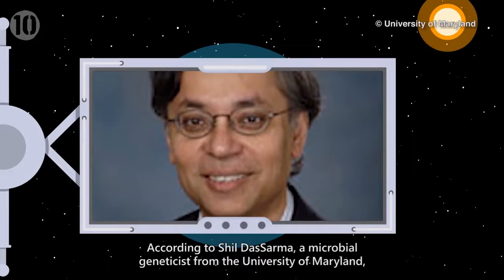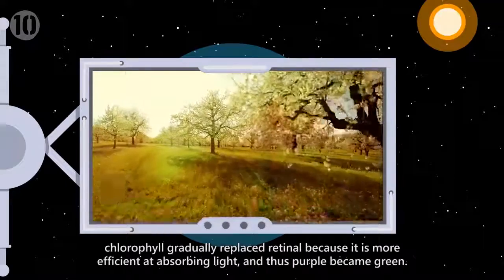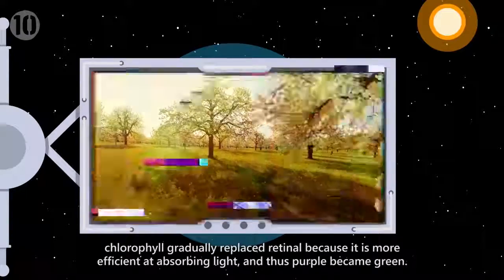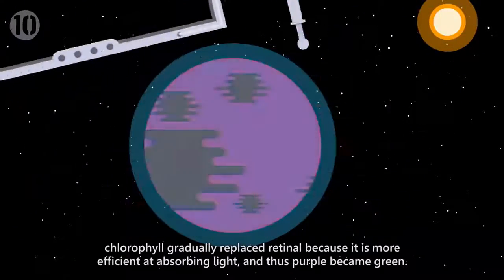According to Shildasama, a microbial geneticist from the University of Maryland, chlorophyll gradually replaced retinol because it is more efficient at absorbing light, and thus purple became green.